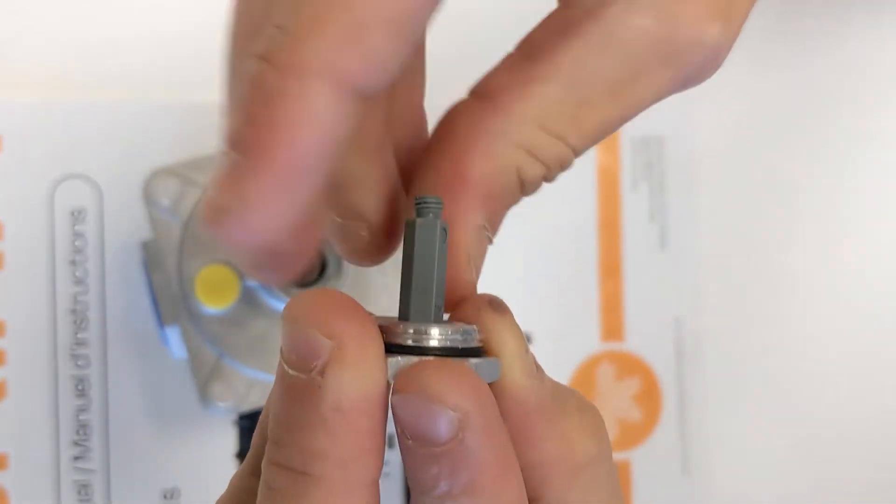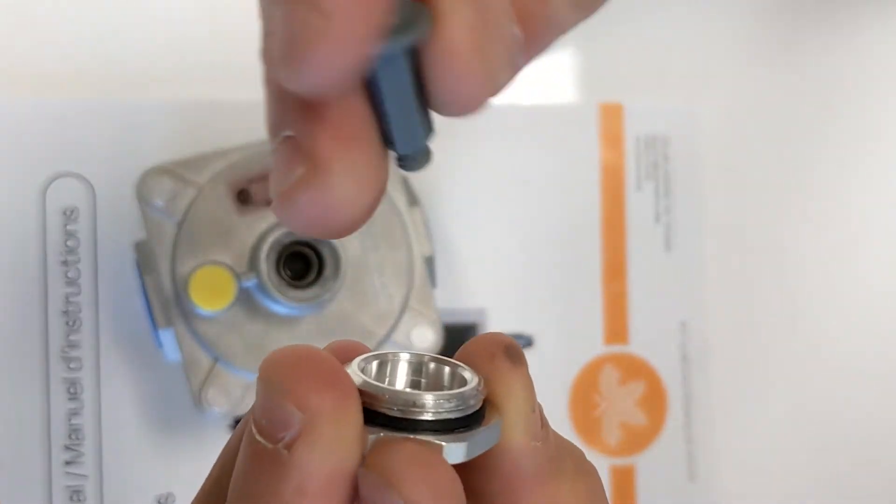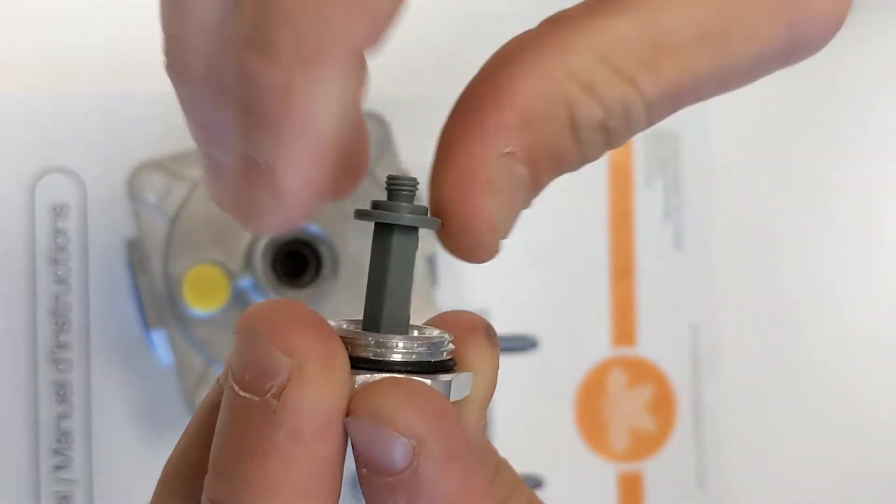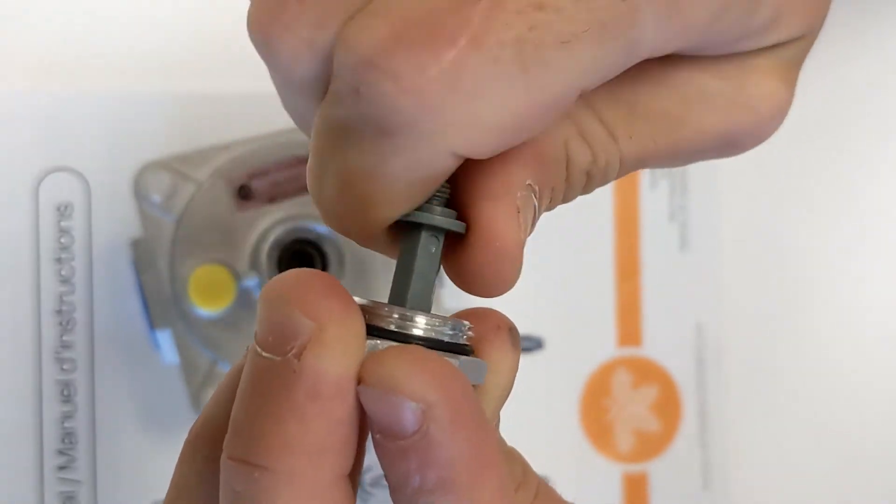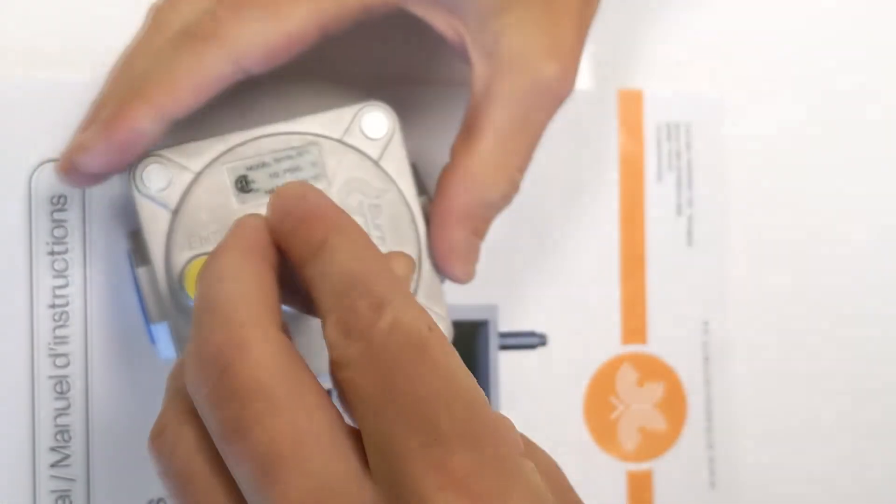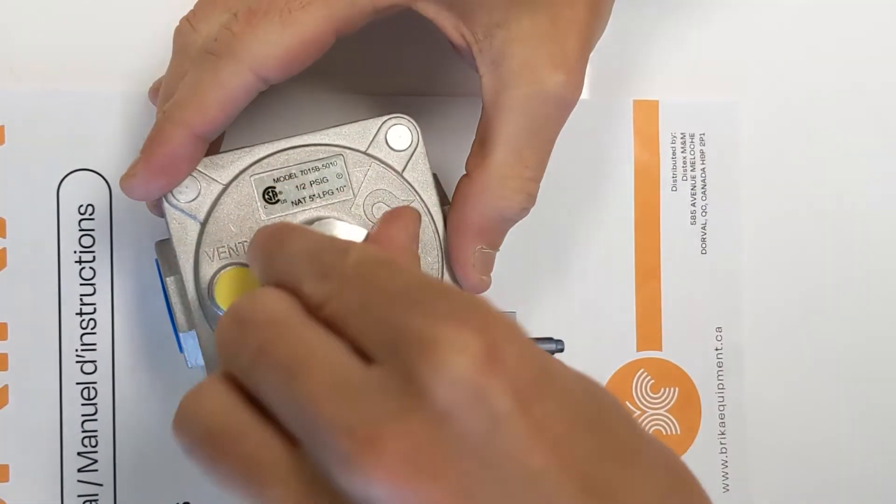To convert to propane, simply unscrew the stem, flip it around, put it back in the cap. And now we have a propane gas regulator ready to go.